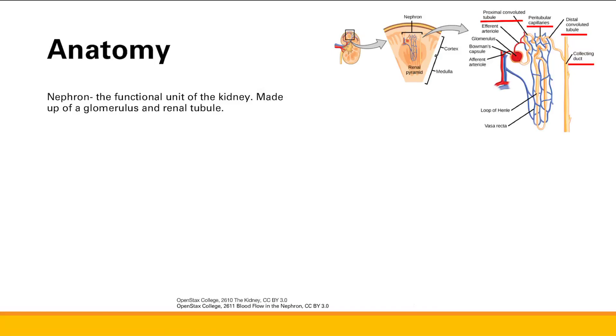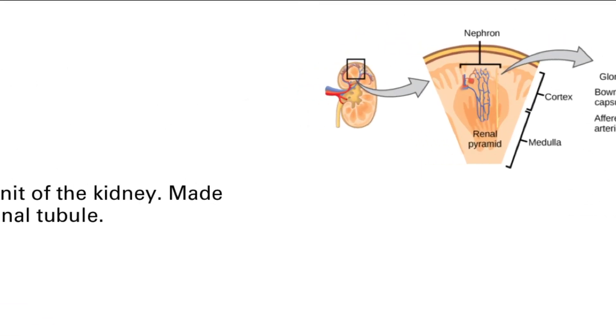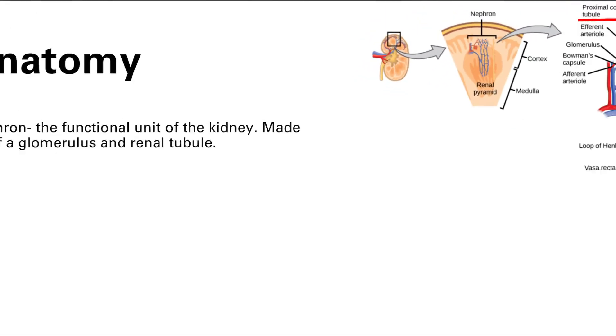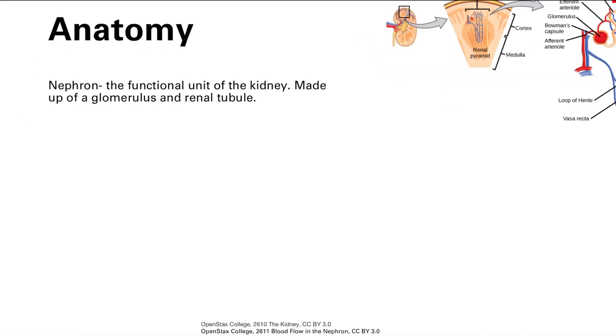So now we're going to look at the anatomy of the kidney, and we're going to take a look at nephrons. The nephron is a functional unit of the kidney.